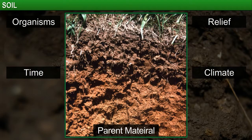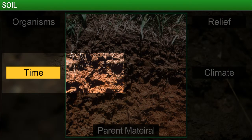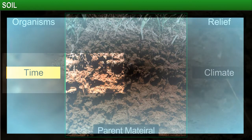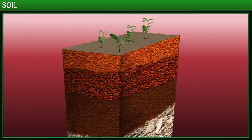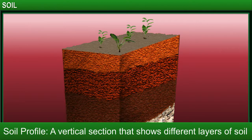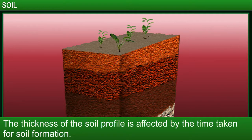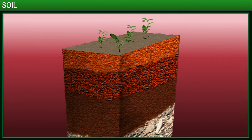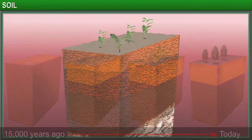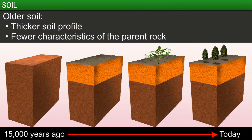We talked about physical and chemical properties of soil as well as its fertility. But how about the thickness of the soil profile? A vertical section that shows different layers of soil is called a soil profile. The thickness of the soil profile is affected by the time taken for the soil to form. Here is a diagrammatic representation of a typical soil profile. Older soil has a thicker soil profile, as over time several layers of soil have been deposited and formed.